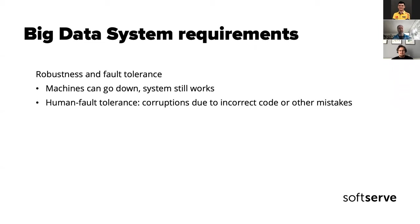The first requirement was robustness and fault tolerance: he wanted to make sure that if machines go down the system still behaves correctly, which happens especially in large clusters. He also wanted human fault tolerance, so any data corruptions — whether due to incorrect code or other mistakes — can be easily fixed, including the ability to delete data that must be removed.